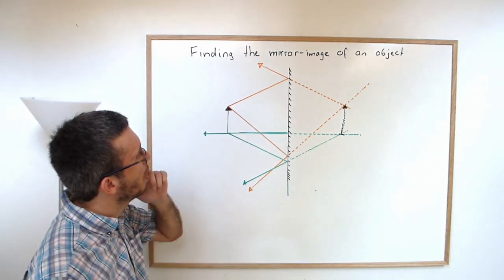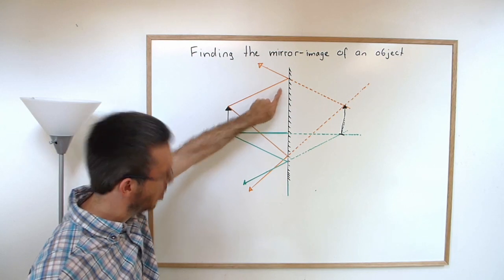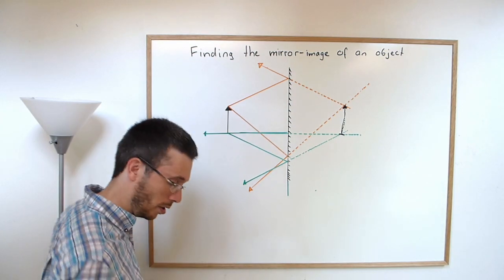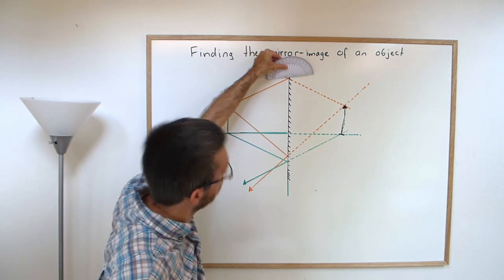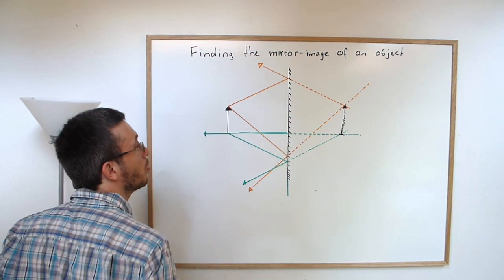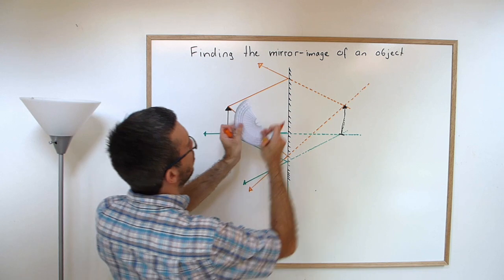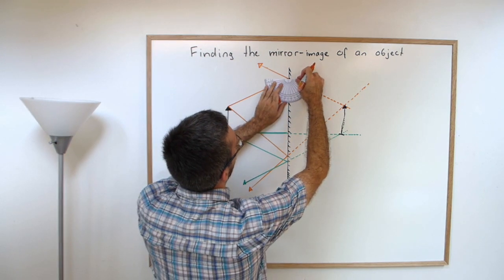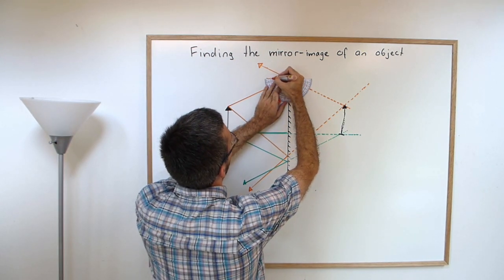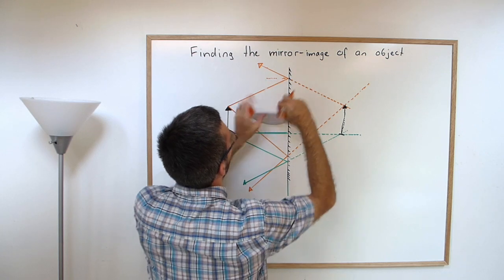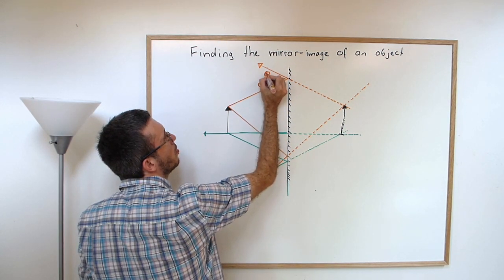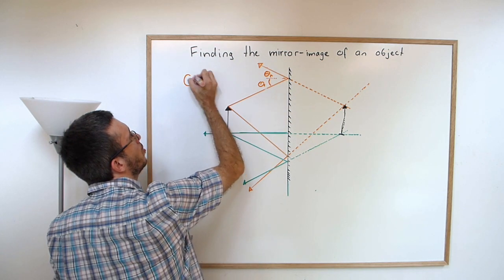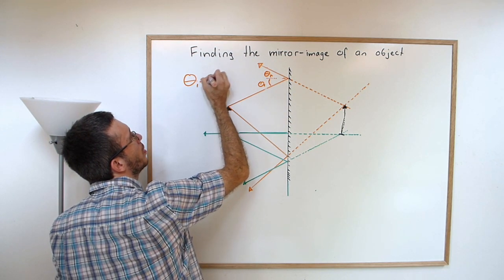Note that I have measured the angles from the surface of the mirror, or I might as well have measured them from the normal to the mirror. According to the law of reflection, if I draw the normal, my incoming angle is always equal to the reflected angle.